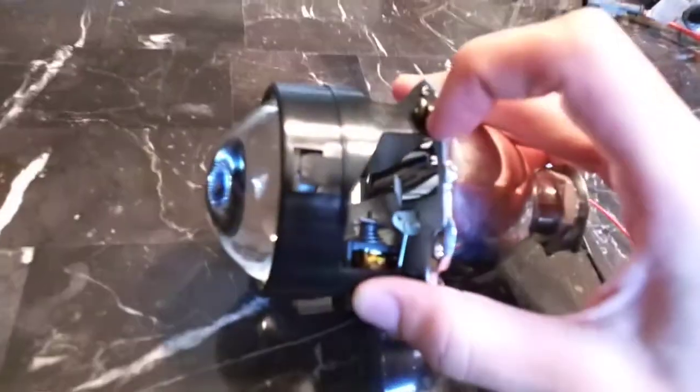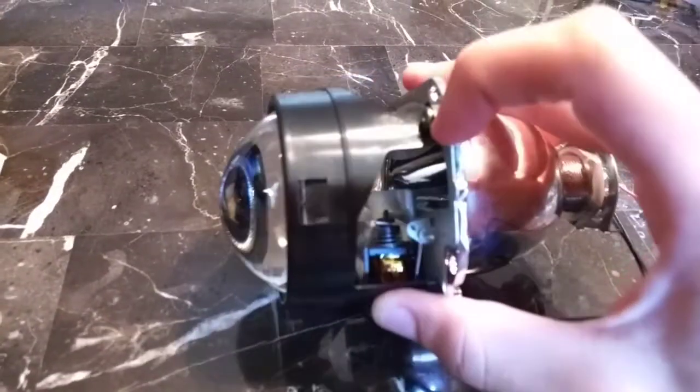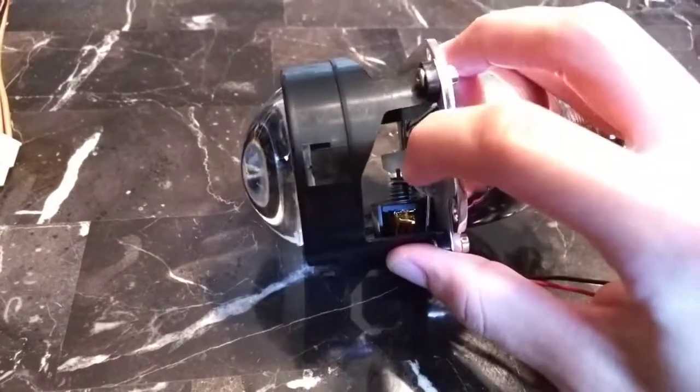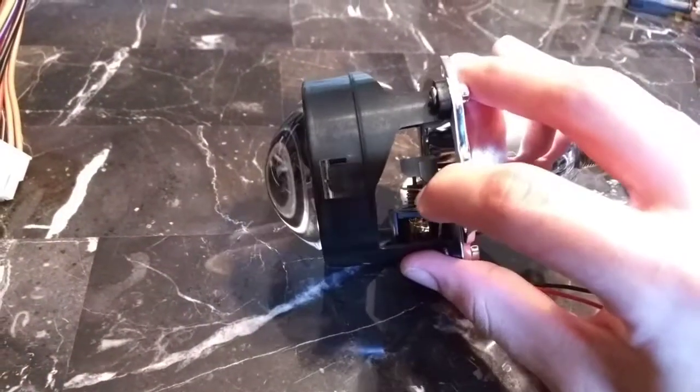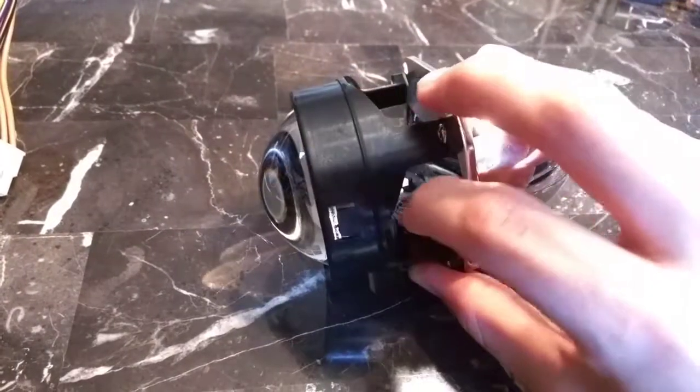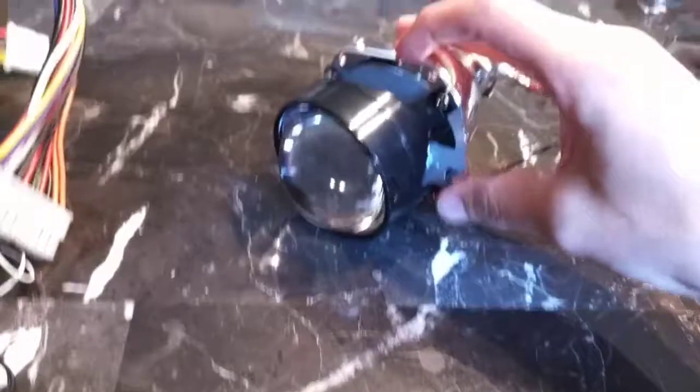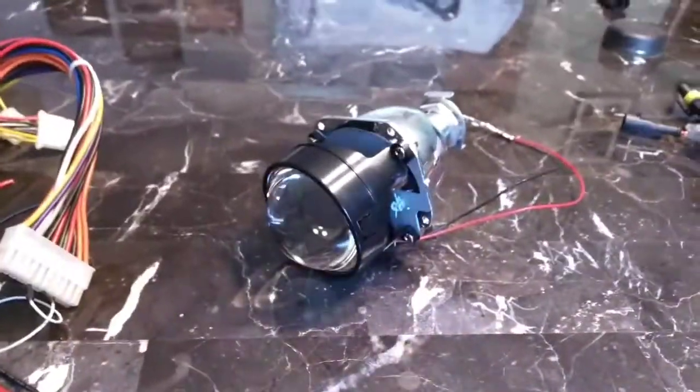It does that by blocking off the upper half of the beam when you're in low beam mode with this metal plate. And then when you flip your high beams on, it moves out of the way and lets the full beam of light pass through. So that's pretty cool. Then you have the HID bulb.